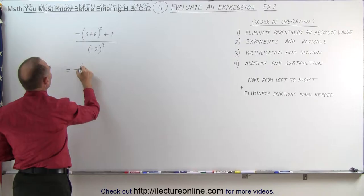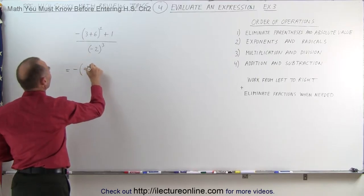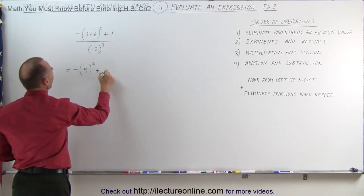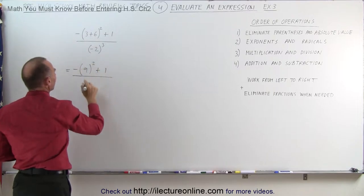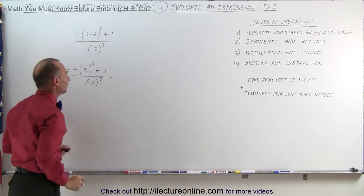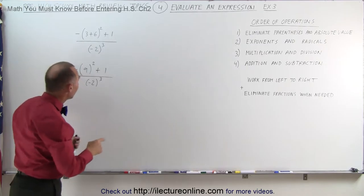So this is equal to the negative of 3 plus 6 which is 9 raised to the second power, plus 1, divided by the denominator which is minus 2 raised to the third power.